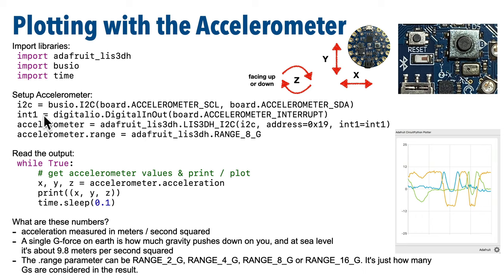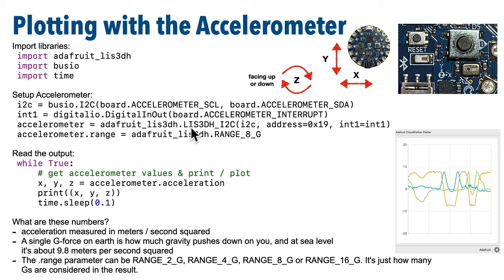In the same way that we configured a digital in-out object for buttons or touchpads, we do the same here, but we pass in `board.ACCELEROMETER_INTERRUPT` inside parentheses. That board statement knows exactly where our accelerometer hardware is and how it needs to be set up when creating a digital in-out object.